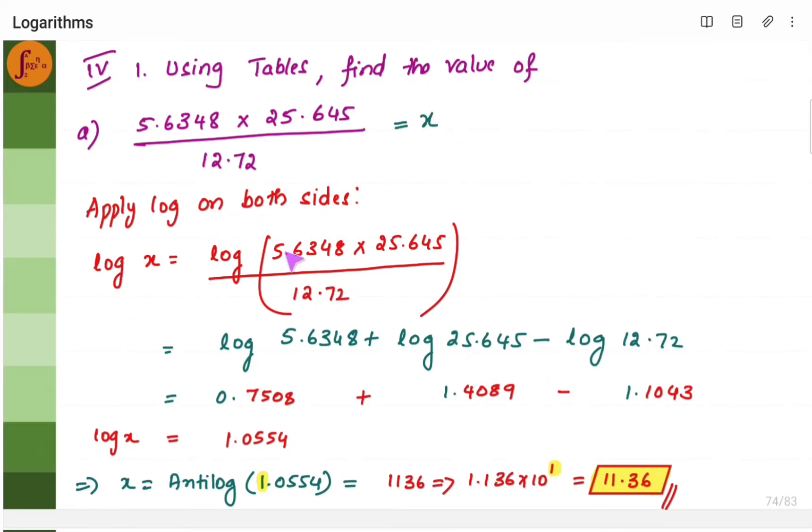So take log on both sides, you get log x is equal to this much. This is nothing but log a times b by c. This is of this form, right? So you can write this as log a plus log b minus log c. If you have division, it becomes minus. If you have multiplication, it becomes addition. Division becomes subtraction.